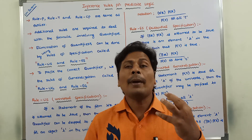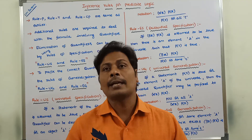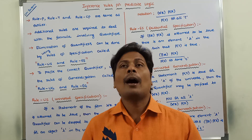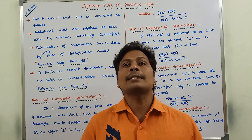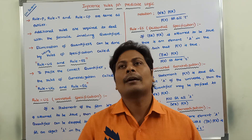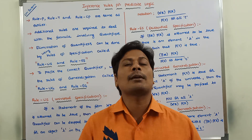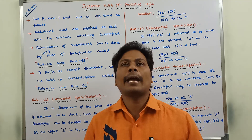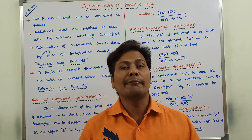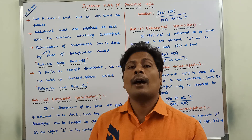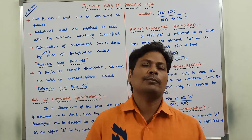Some additional rules are required to deal with formulas involving quantifiers such as universal quantifier and existential quantifier. Whenever any formula contains a universal quantifier, rule P, rule T, and rule CP are not sufficient. At that time, we have to use some additional rules to deal with formulas involving quantifiers.